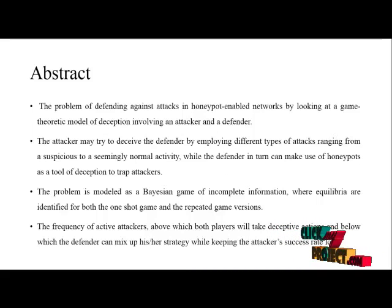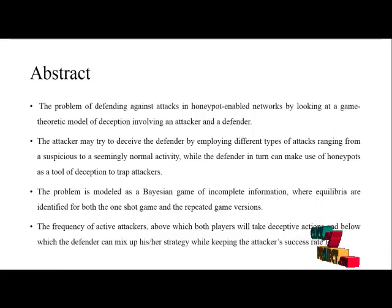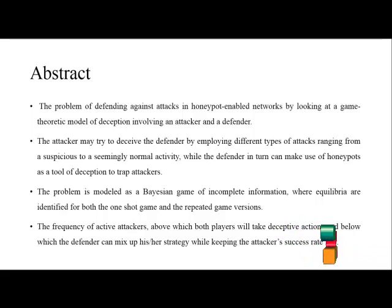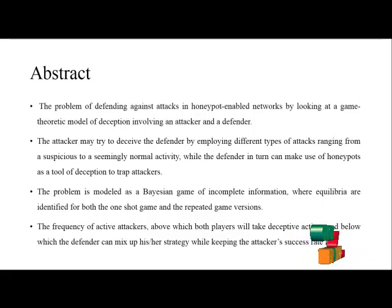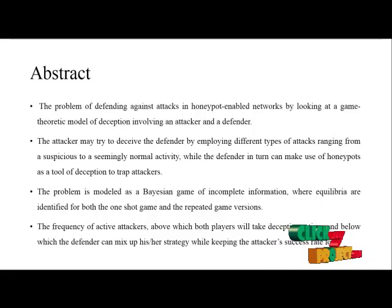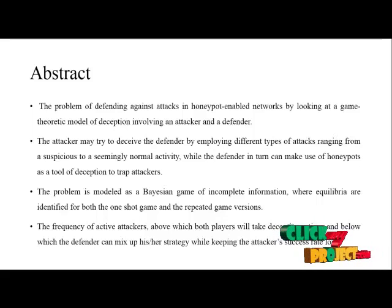The problem of defending against attacks in Honeypot Enabled Networks is examined using a game-theoretical model of deception involving attackers and defenders. The attackers may try to deceive the defenders by deploying different types of attacks, ranging from suspicious to seemingly normal activity, while the defender can make use of a Honeypot as a tool of deception to trap attackers.